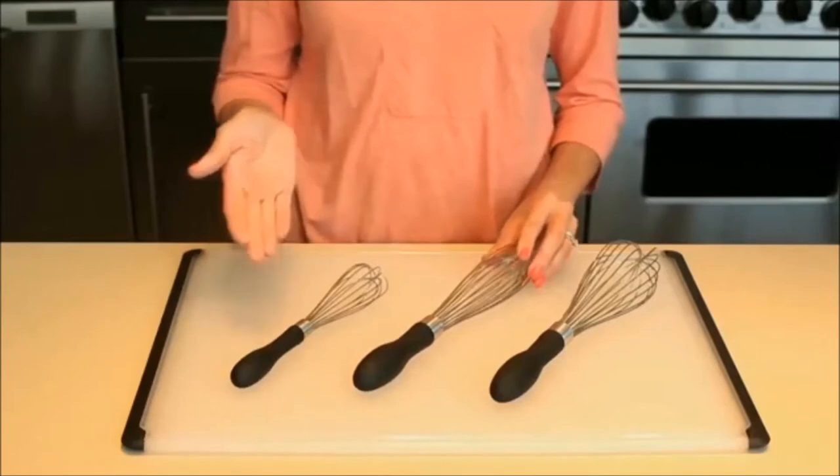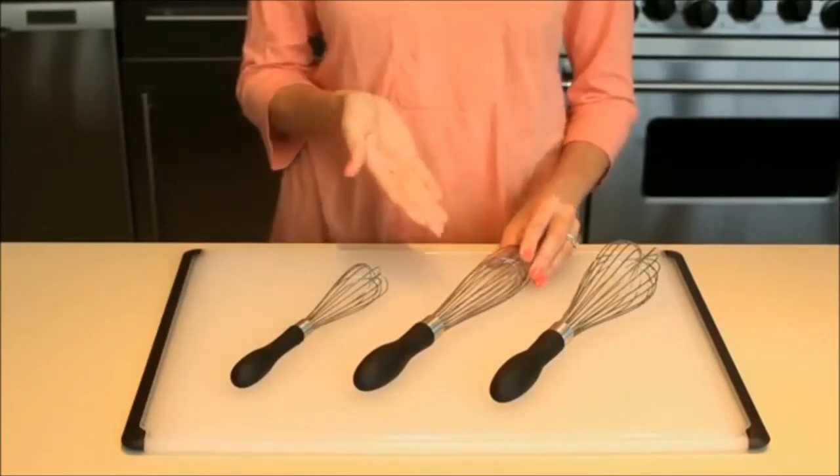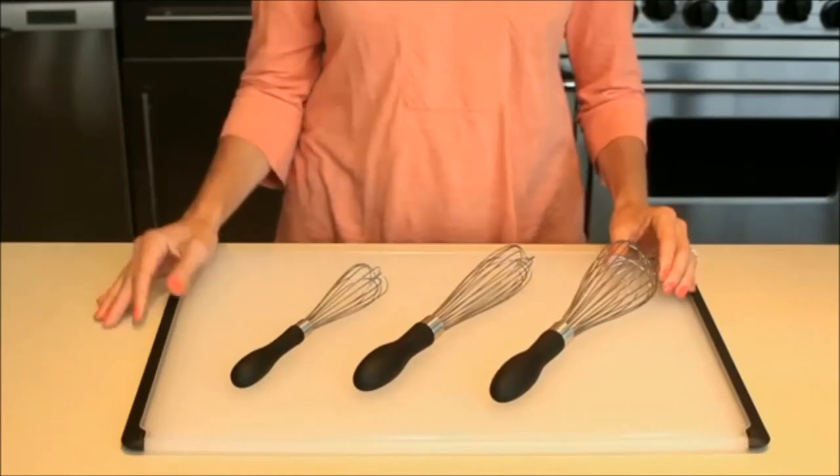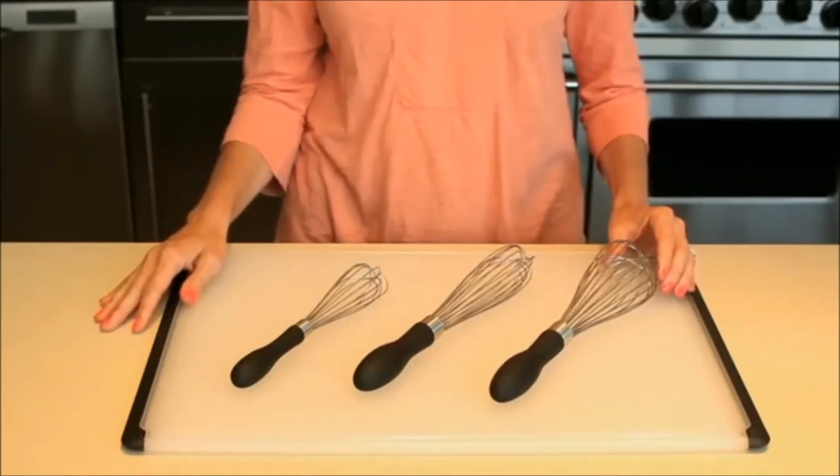9 inches nice for small jobs, 11 inches for larger batches. The balloon whisk incorporates more air for fluffier omelets or whipping up cream or stirring a pot of sauce.